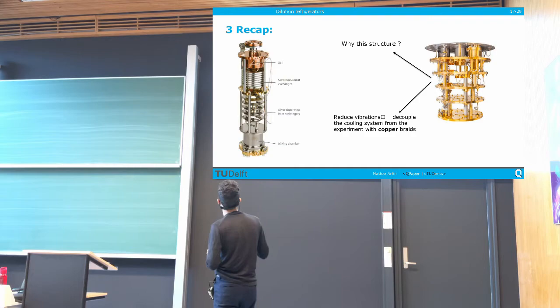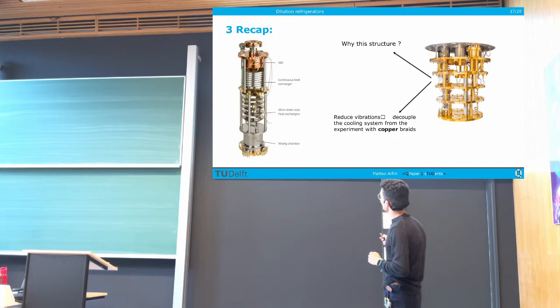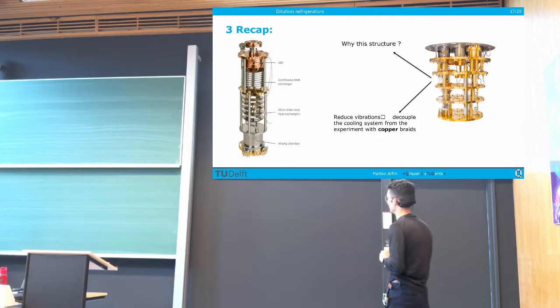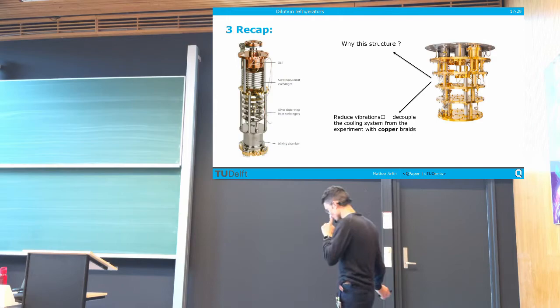Here you can see an actual real device. We have the still at 0.7 K, then a series of continuous heat exchangers down to around 20 mK, then a series of silver step heat exchangers to reach the very low millikelvin temperature range, and here the mixing chamber where the cooling power is achieved.